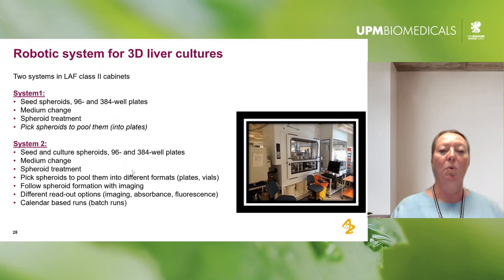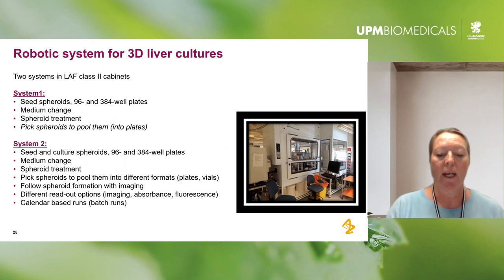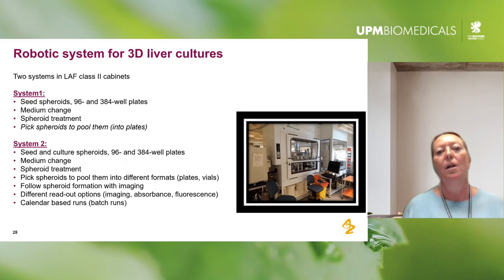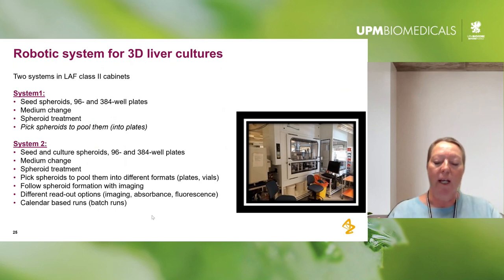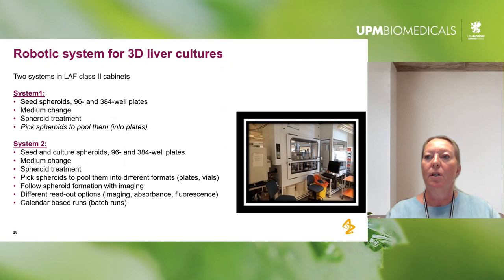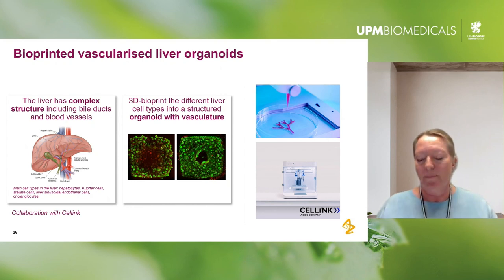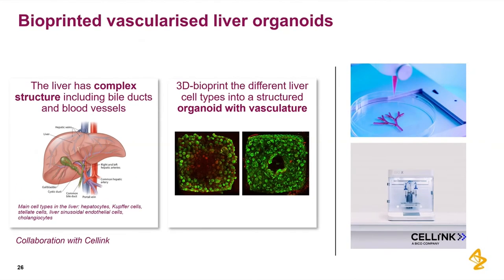We have an ongoing, almost finalized, fully automated system for handling everything with the spheroids. We also have a collaboration with KTH and Karolinska on forming mini spheroids from just 100 cells instead of 2,000, which could be put into a more high-throughput screening perspective. We are also using the 3D liver cultures for bioprinting — trying to bioprint vascularized liver organoids — in collaboration with CellLink.